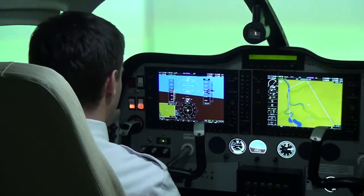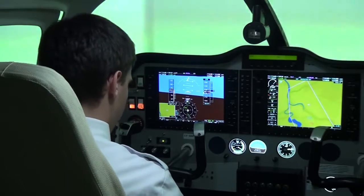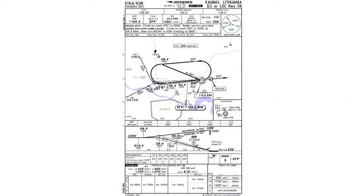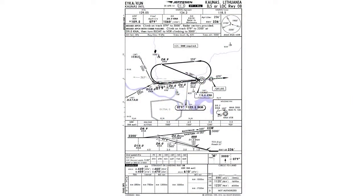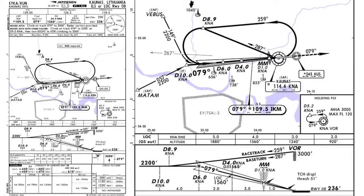We have some time while flying on the radial — let's review the approach chart. We have the approach chart for Kaunas International Airport ILS runway 08. Radio frequencies are set. Localizer frequency is set and checked. Final approach course will be 079. Glide slope will be checked at 4 miles from KN Alpha.